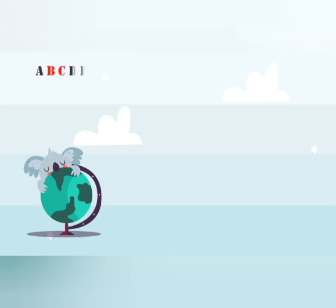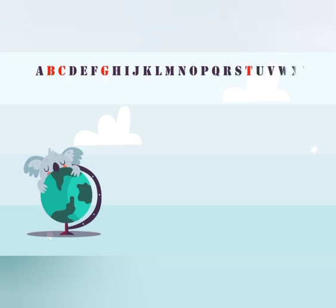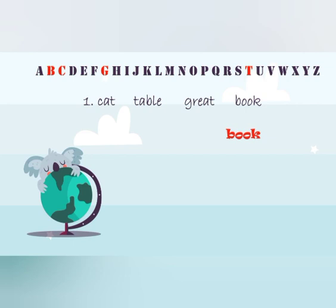In alphabetical order: B comes first, so we will write 'book' first. Then comes C, so we will write 'cat' next. Then comes G, so we will write 'great', and the last comes T, so we will write 'tabla'. This way you have to arrange words in alphabetical order.